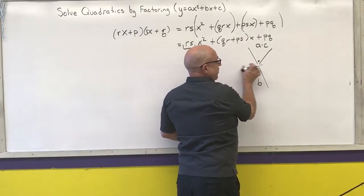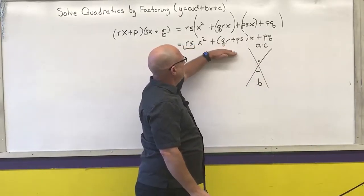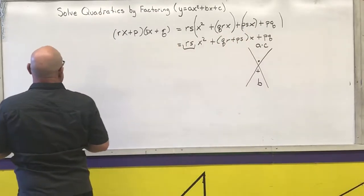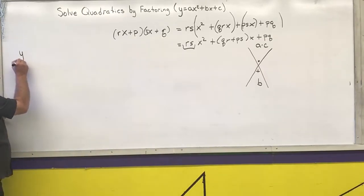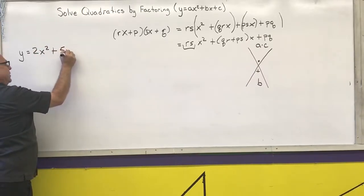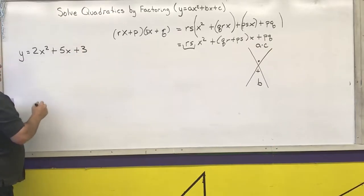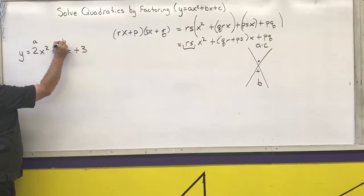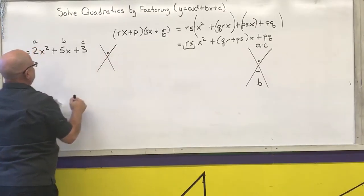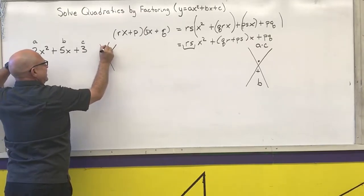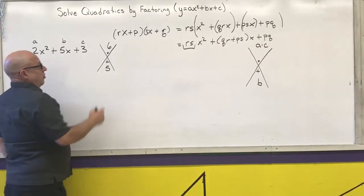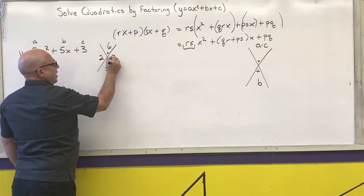These two numbers are not going to be our overall solution, but they are going to help me go from here to here so I can factor by grouping. Best to show you an example. y equals 2x squared plus 5x plus 3. Remember this is your a, this is your b, this is your c. I need two numbers that multiply to 2 times 3, which is 6, that add to 5. Those two numbers are 2 and 3.